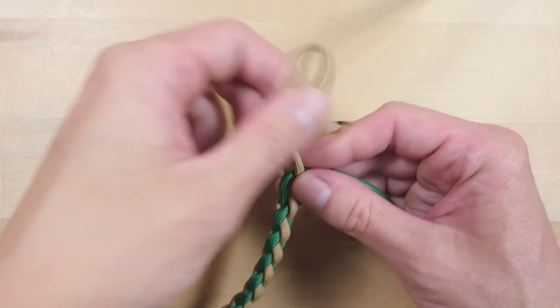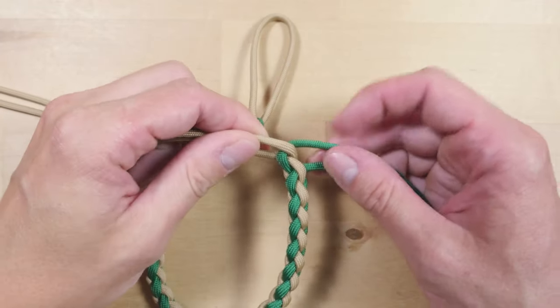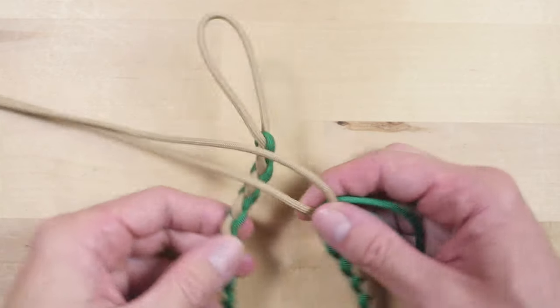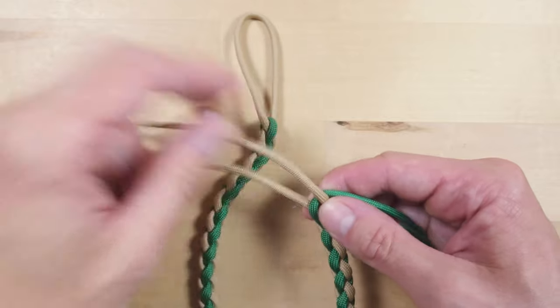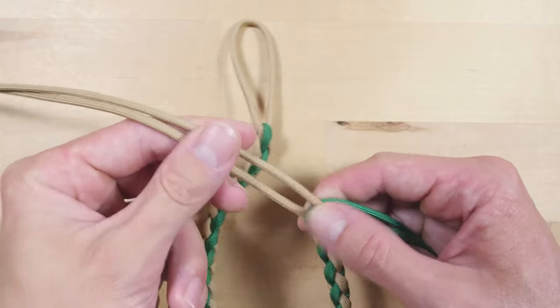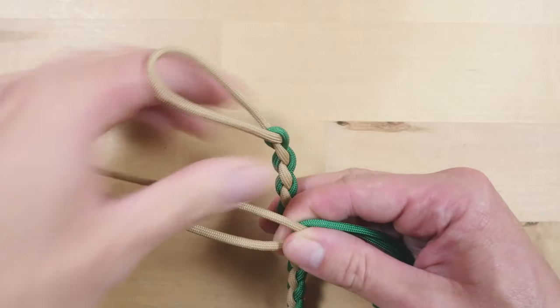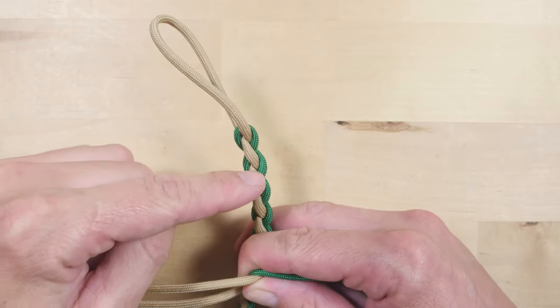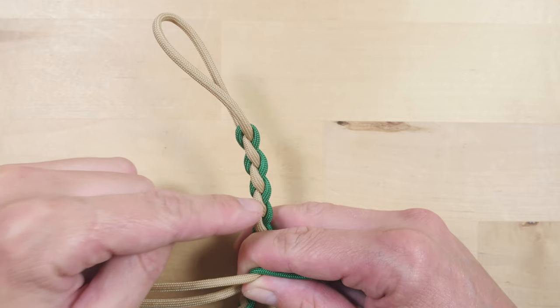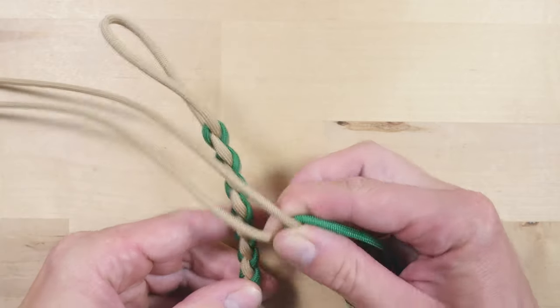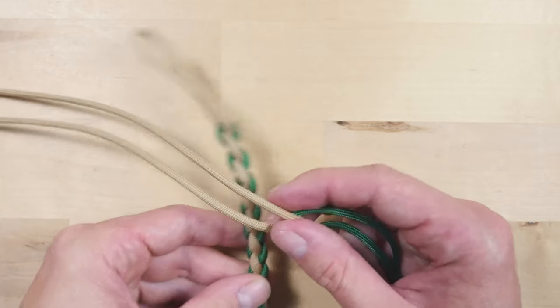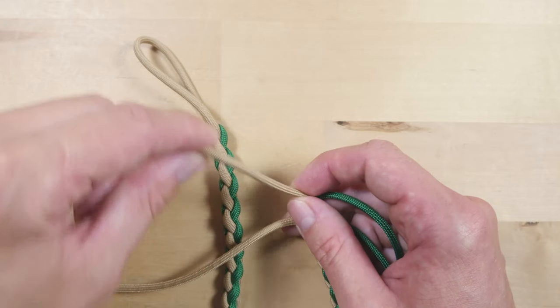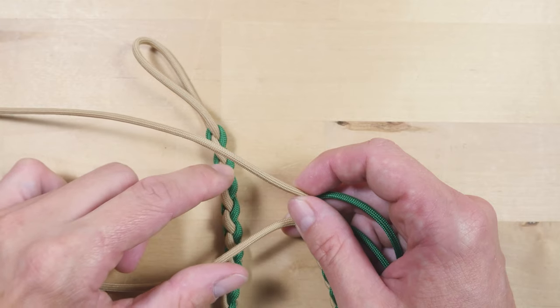We're now going to work in the four ends coming from the braid, back into the braid. I'm going to start with these two ends, and I'm going to place them here, over the second and third strand. This one is going to follow this one, and this one is going to follow this one.